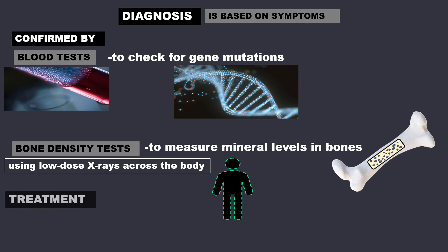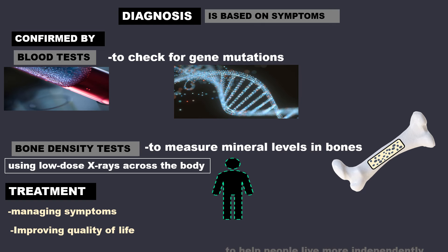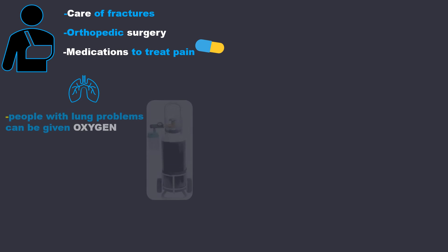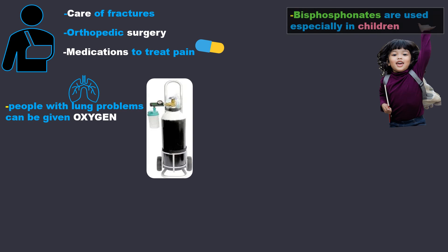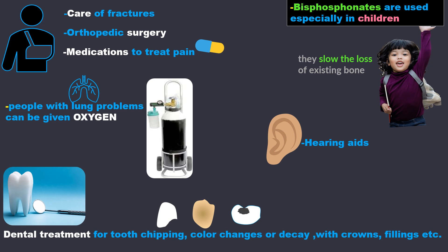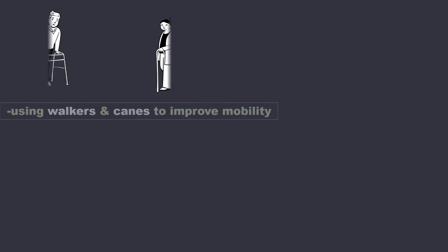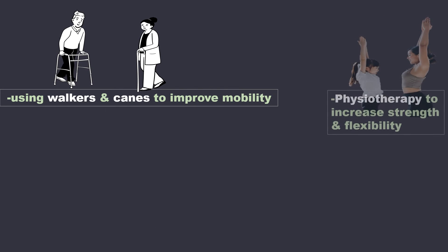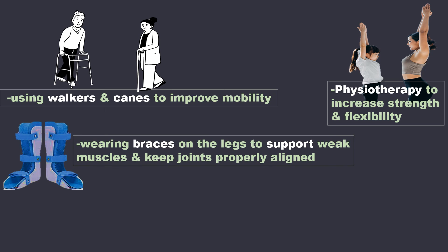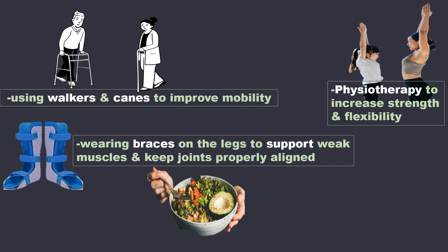Treatment is essentially managing symptoms and improving quality of life to help people live more independently. This includes care of fractures, orthopedic surgery, and medications for pain. People with lung problems can be given oxygen. Bisphosphonates are used especially in children to slow the loss of existing bone. Hearing aids can be used for hearing loss, and dental treatment such as crowns and fillings addresses tooth chipping, color changes, or decay. Walkers and canes improve mobility, physiotherapy increases strength and flexibility, and braces on the legs support weak muscles and keep joints properly aligned. A nutritious diet full of calcium and vitamin D is also essential.